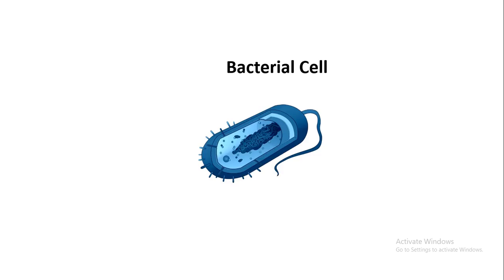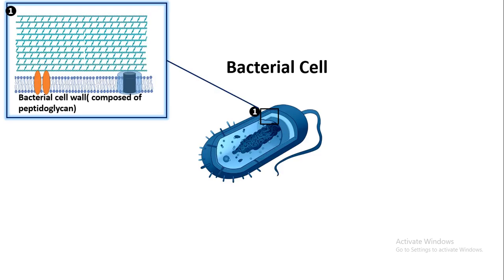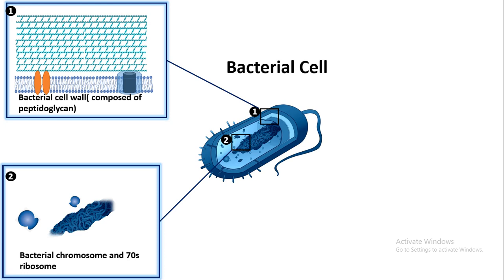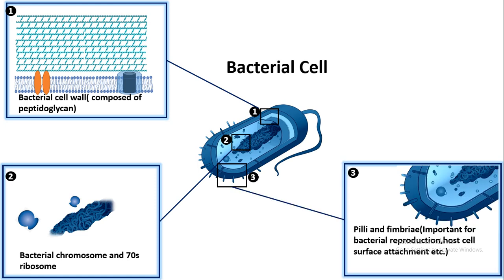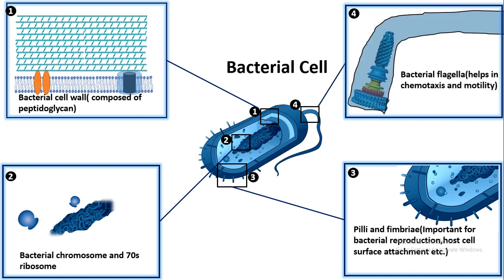Now let's look at a bacterial cell. A bacterial cell has an outermost layer known as the cell wall, which helps protect the bacteria against harsh environments and also maintains osmolarity balance. Inside the cytoplasm it has its genetic material, though it doesn't have any nucleus because it's a prokaryote. It also has the protein synthesis machinery — the 70S ribosomes. It has hair-like appendages known as pili and fimbriae, which are important for reproduction and cell attachment to the host cell membrane. It also has a molecular motor known as flagella, which helps in chemotaxis and bacterial motility.